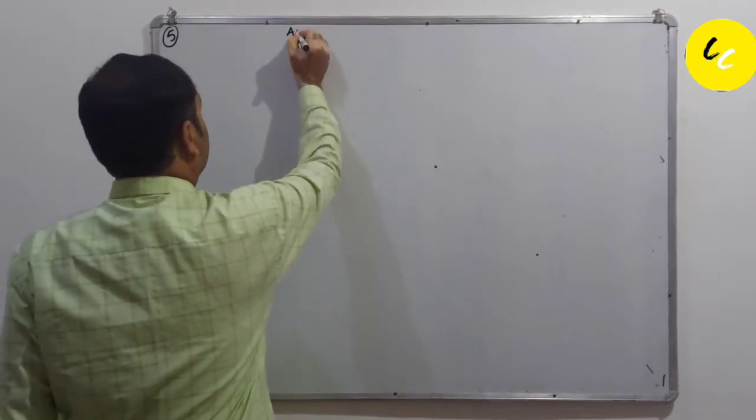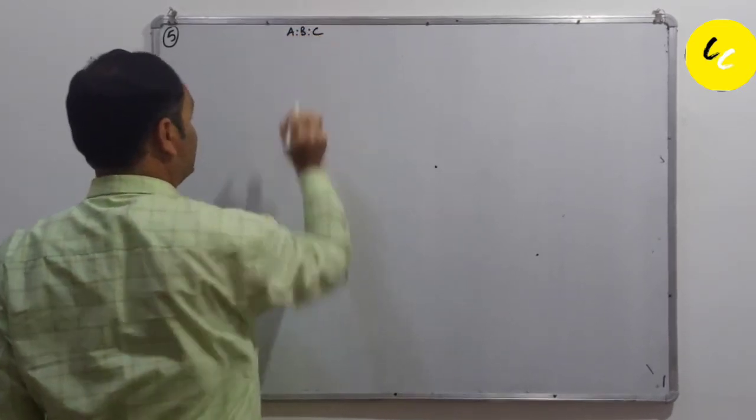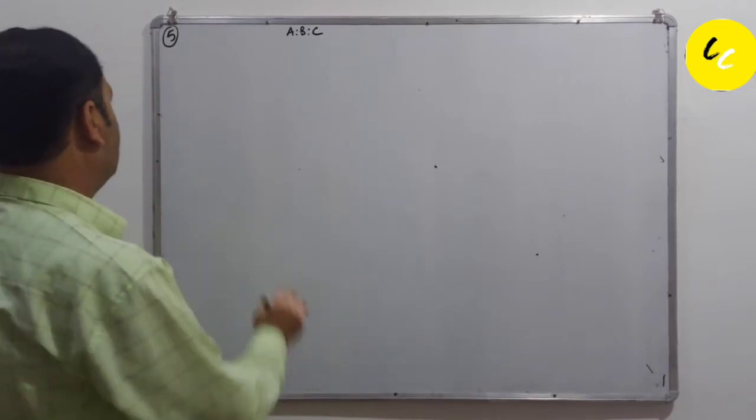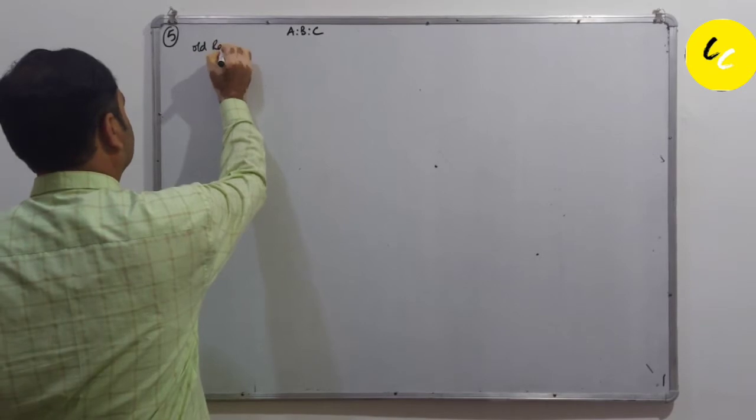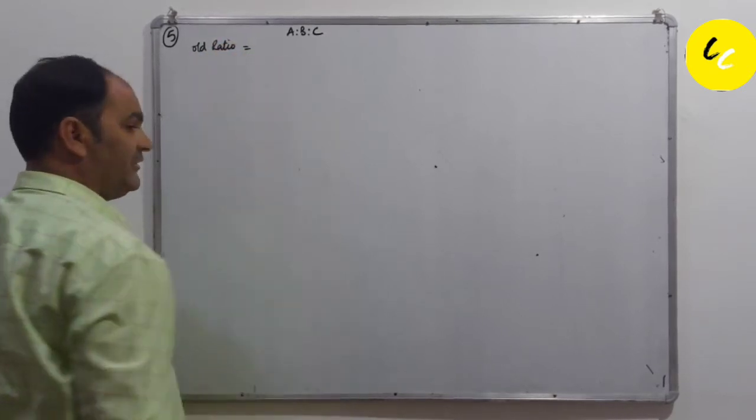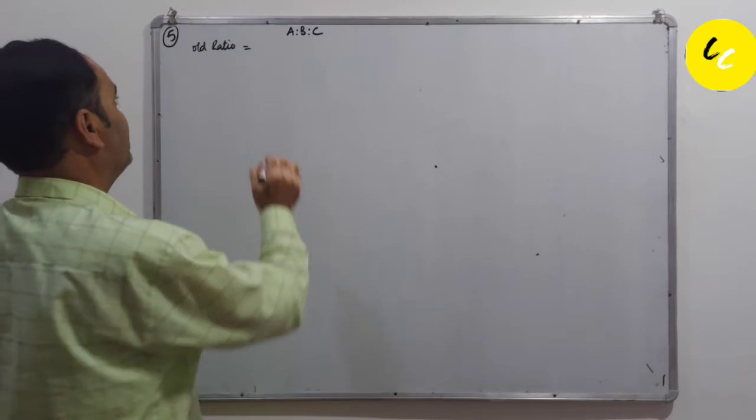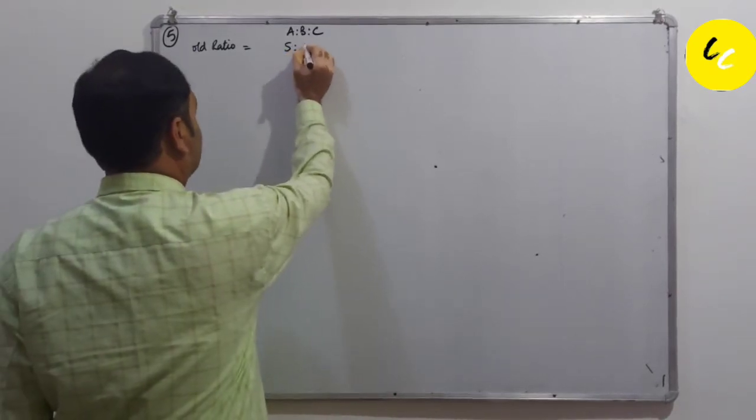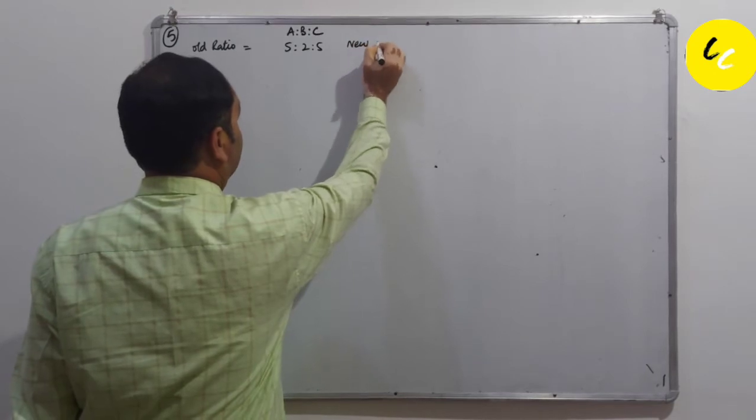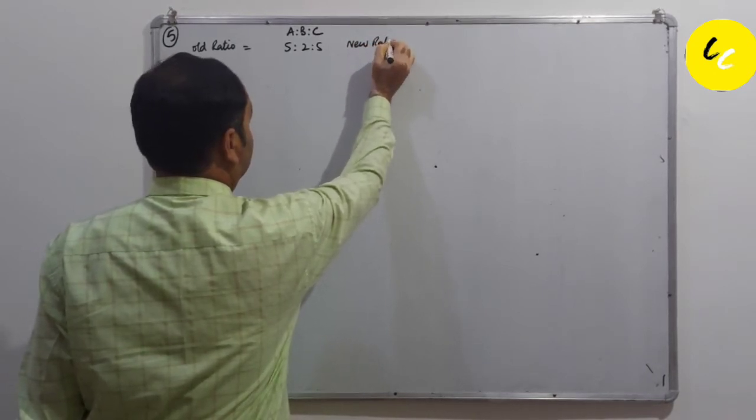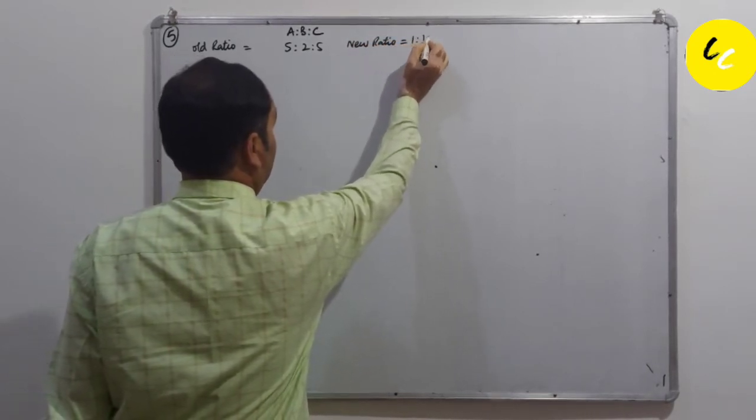We have three partners A, B, and C. Our old ratio is 5:2:5, and the new ratio is equal to 1:1:1.